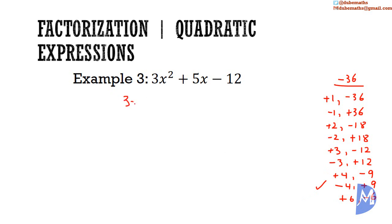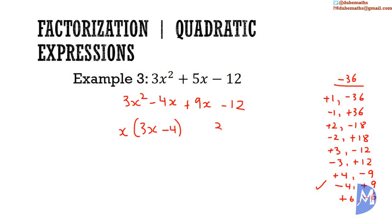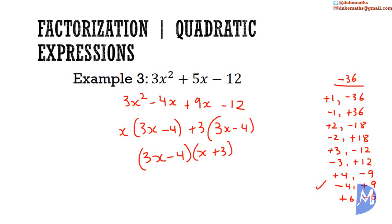We now have 3x squared minus 4x plus 9x minus 12. The HCF of 3x squared and negative 4x is x. x multiplied by 3x gives 3x squared; x multiplied by negative 4 gives negative 4x. The bracket is 3x minus 4. We multiply 3x by positive 3 to get positive 9x, and positive 3 by negative 4 gives negative 12. The HCF is 3x minus 4, and we multiply by x and positive 3.